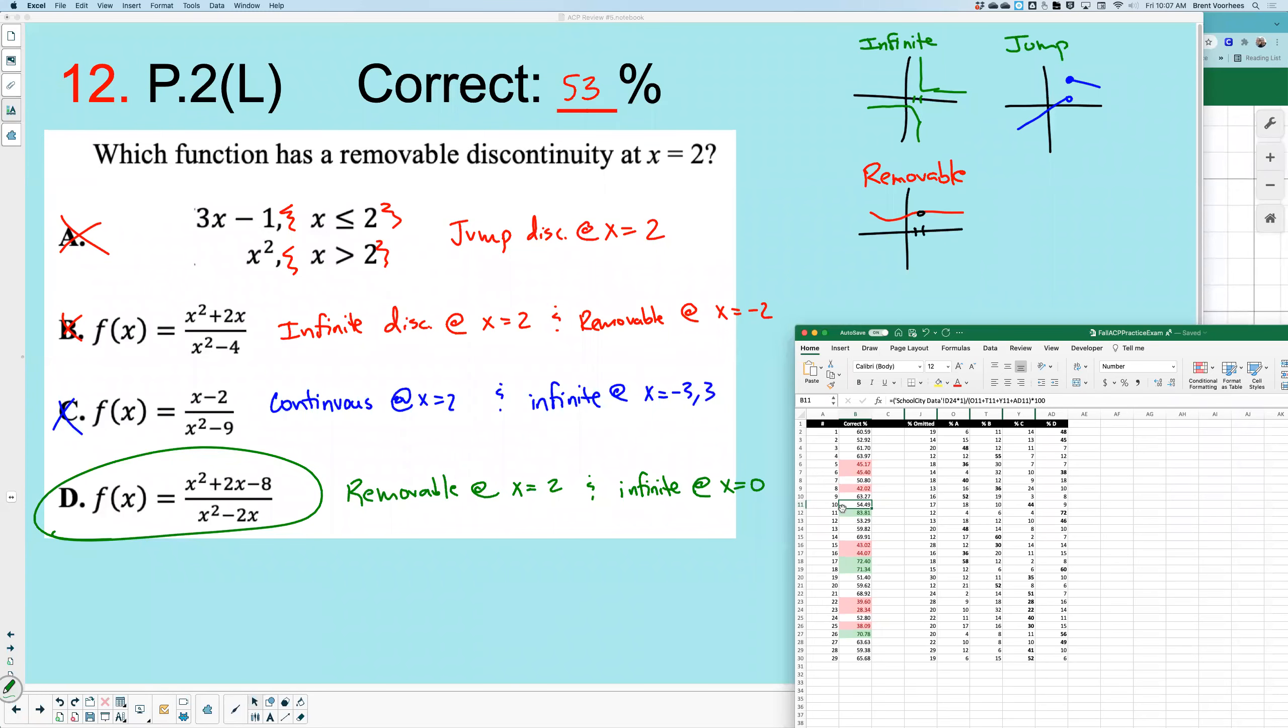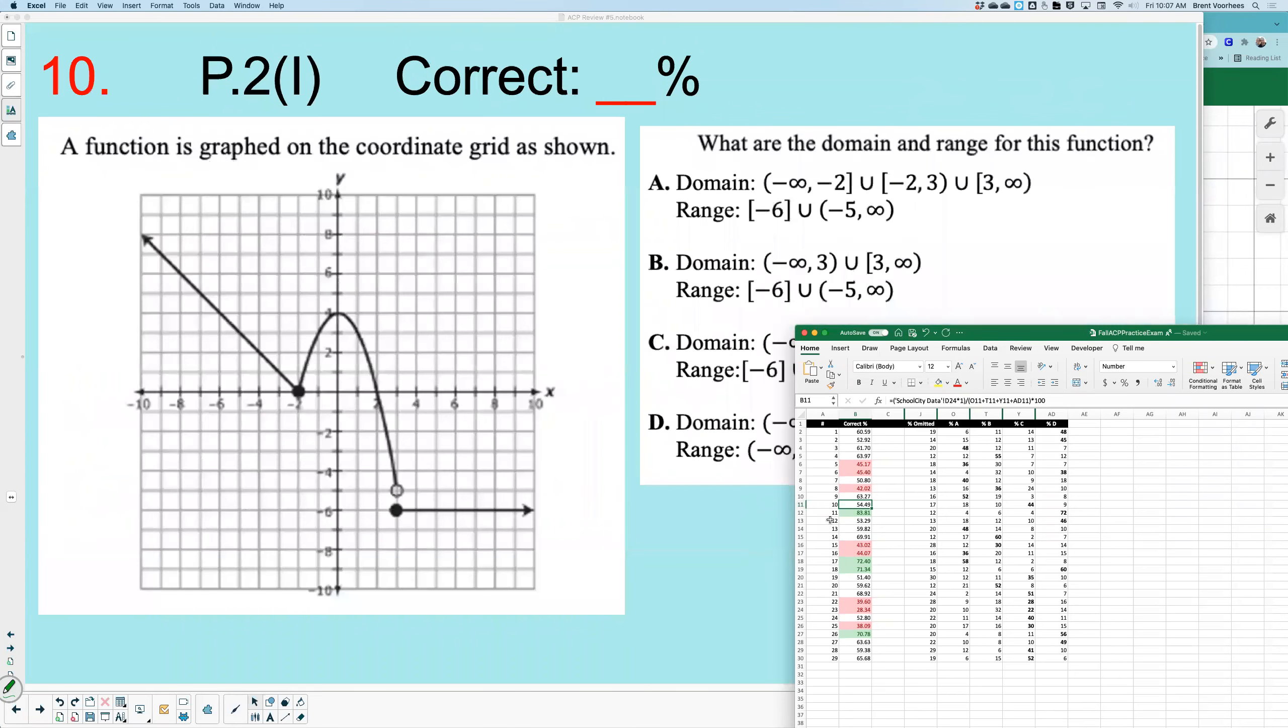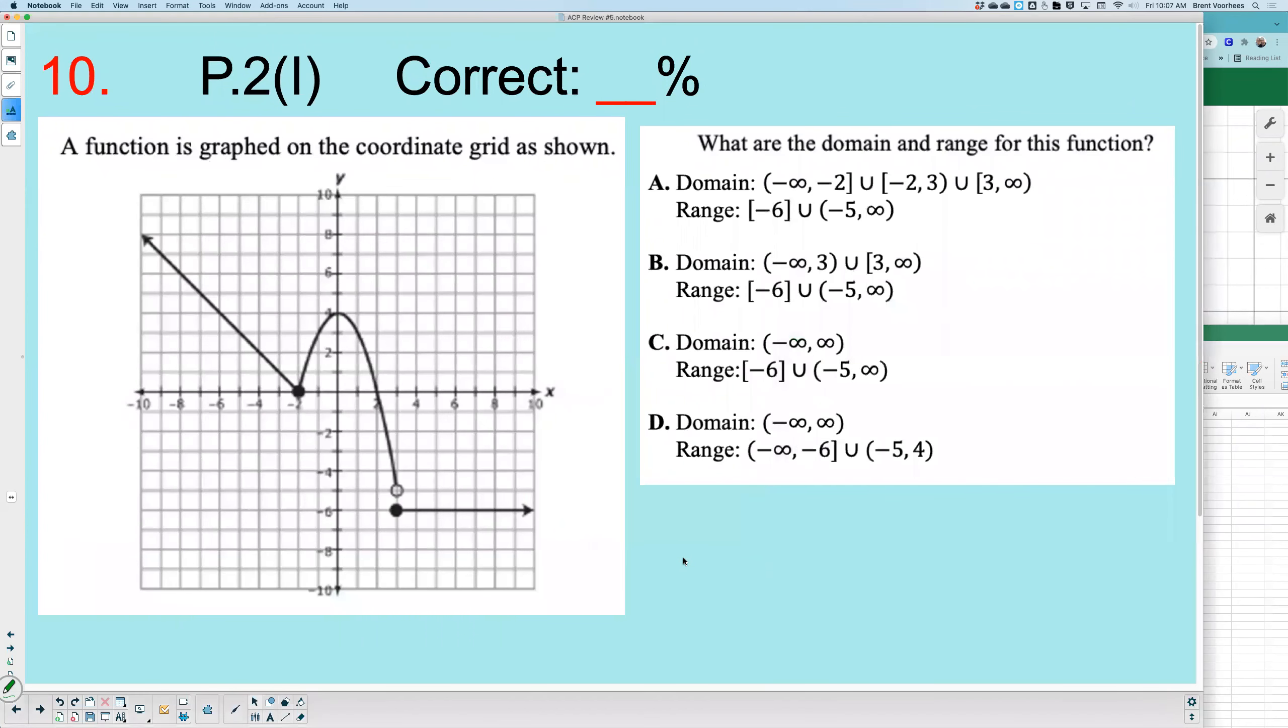It appears to me the next lowest is number 10. Let's go to number 10. This is 54.49, so 54%.